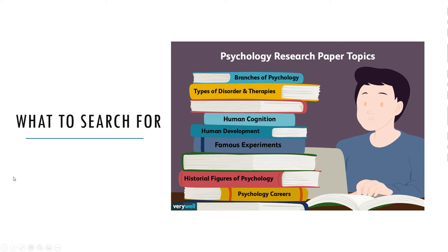Several basic principles can help you find the most useful sources. First, it's best to focus on recent research — what counts as recent depends on the topic. For newer topics that are actively being studied, recent might mean published in the past year or two. For older topics receiving less attention, recent might mean within the past 10 years. A good general rule is to start with sources published in the past five years. The main exception would be classic articles that turn up in the reference list of nearly every other source — if other researchers think that work is important even though it's old, then by all means include it in your review.